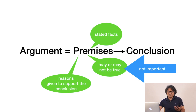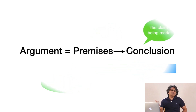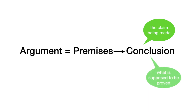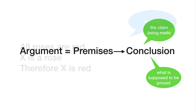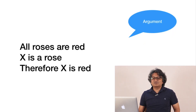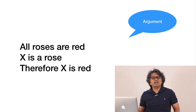Now let us define a conclusion. The conclusion is the claim that is being made, for which the premises are required — it is whatever is supposed to be proved in an argument. Something is supposed to be proved, and something helps or supports that. What is supposed to be proved is the conclusion. For example: 'All roses are red; X is a rose; therefore X is red.' The first two are the premises, and based on those you reach the conclusion: 'therefore X is red.'